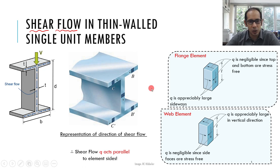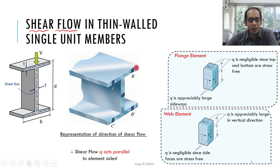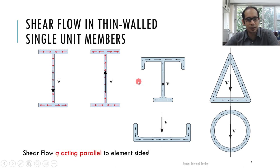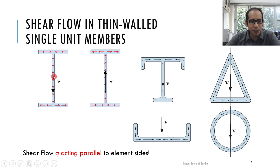Now that we understand how shear flow occurs, the question is: what is the magnitude of these arrows? For a rectangular beam the shear was small at the edges, higher toward the center, and negligible at the bottom. For the I-section with applied force P = V, how does the magnitude of q or τ vary as we go from the edges of the flange to the center, down through the web to the middle and all the way to the bottom?